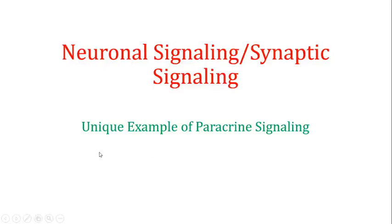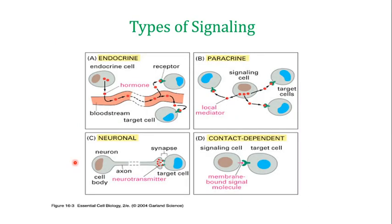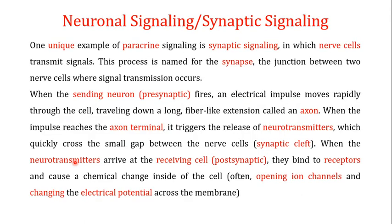Welcome back to this next video. This is part two on the neuronal or synaptic signaling. In the last video, I told you about the endocrine, the paracrine, the neuronal, and the contact-dependent signaling, which are the major types of cell signaling. I told you that neuronal signaling is a unique example of paracrine signaling, in which the pre-synaptic neuron fires an electrical impulse that moves down the axon. When the electrical impulse reaches the axon terminal, neurotransmitters are released into the synaptic cleft, where they interact with receptors of the post-synaptic neuron, causing a chemical change by opening ion channels and changing the electrical potential across the cell membrane.